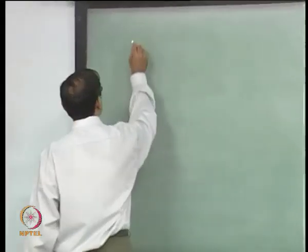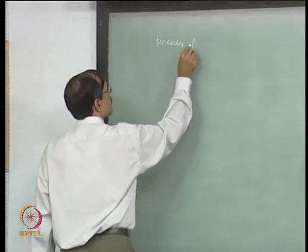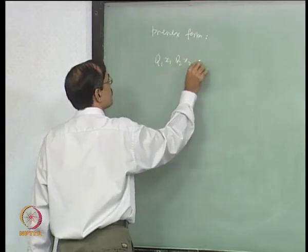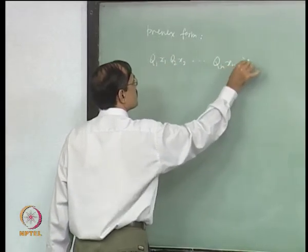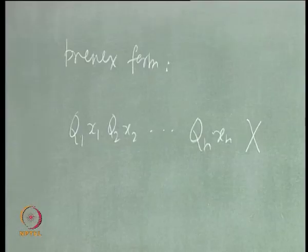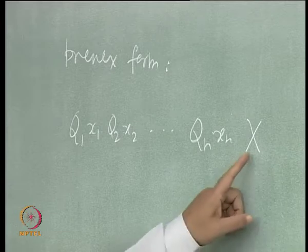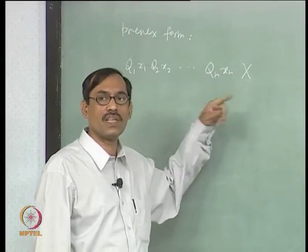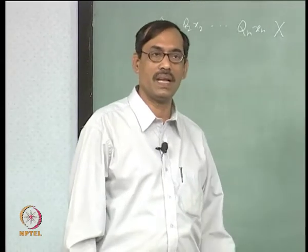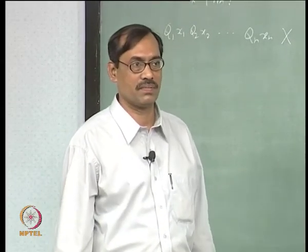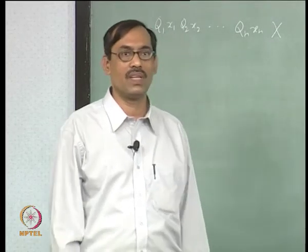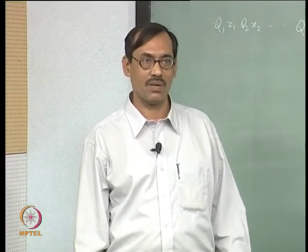Suppose we have a formula in prenex form. It would look something like Q₁x₁, Q₂x₂, ..., Qₙxₙ and then some matrix of the formula which is quantifier-free. Now, there can be some free variables in x which have never been quantified here. If your original formula has those free variables, then by rectification or by renaming, those free variables still remain as free variables. We want to preserve satisfiability. Our earlier theorem really helps here. We can convert to a sentence, because we know that a formula is satisfiable if and only if its existential closure is satisfiable.